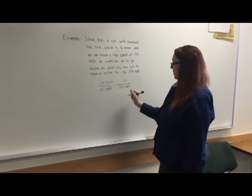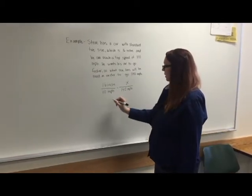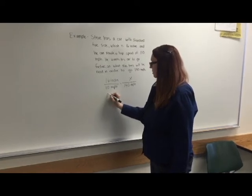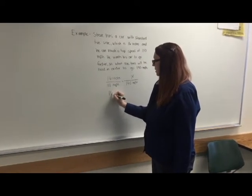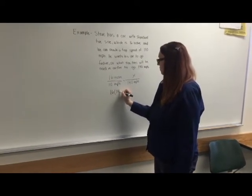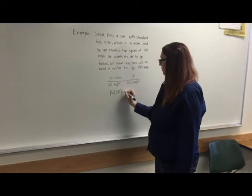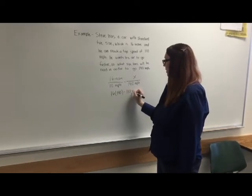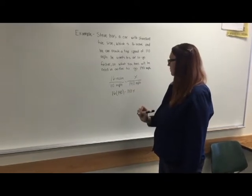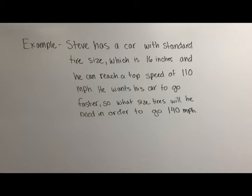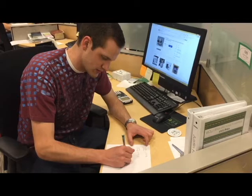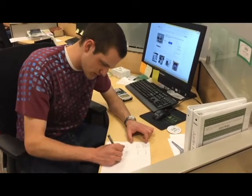In order to do this, we're just going to set up our equation — cross-multiplying. 140 equals 110 x. That's my same tire size, and that's how fast I need to go. I could actually use this on my car.